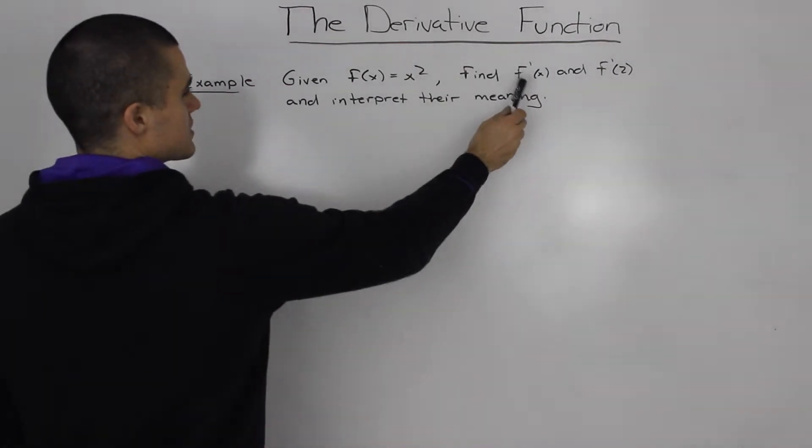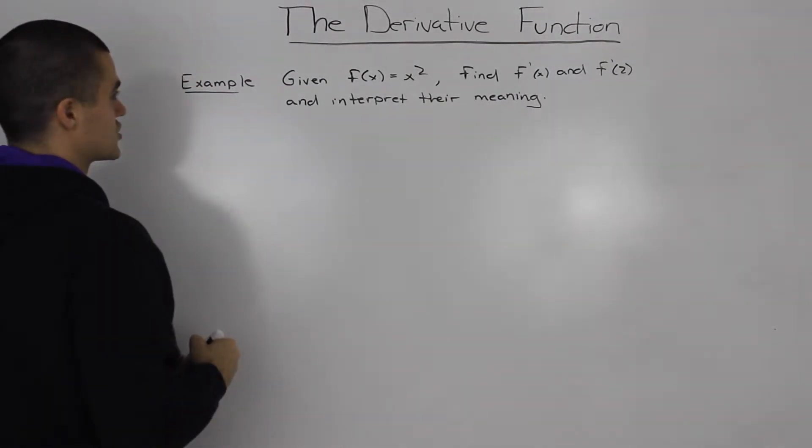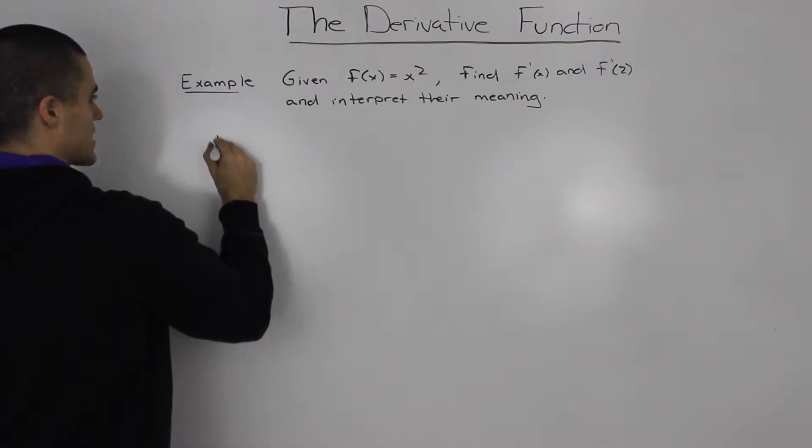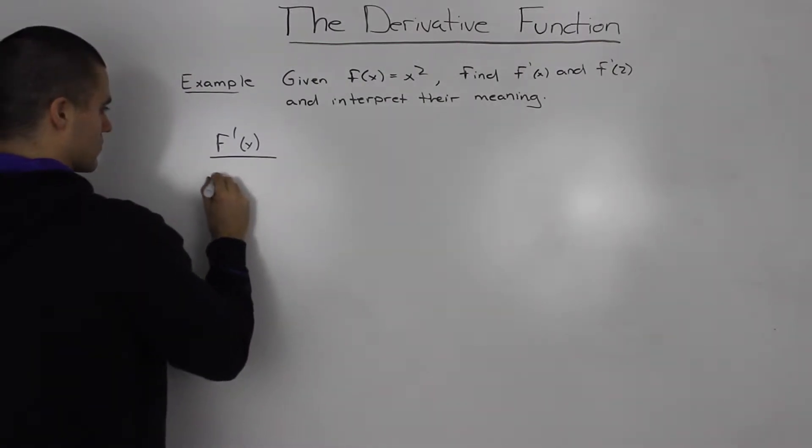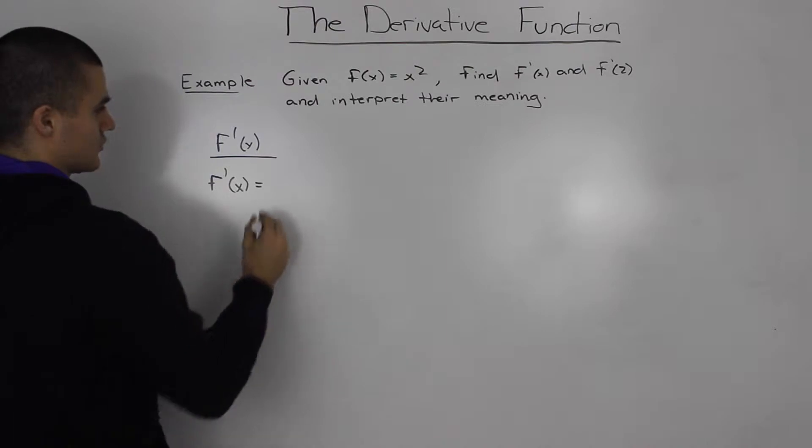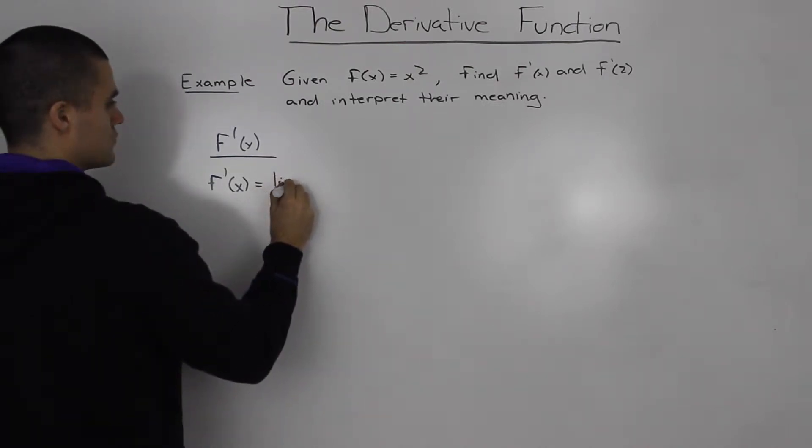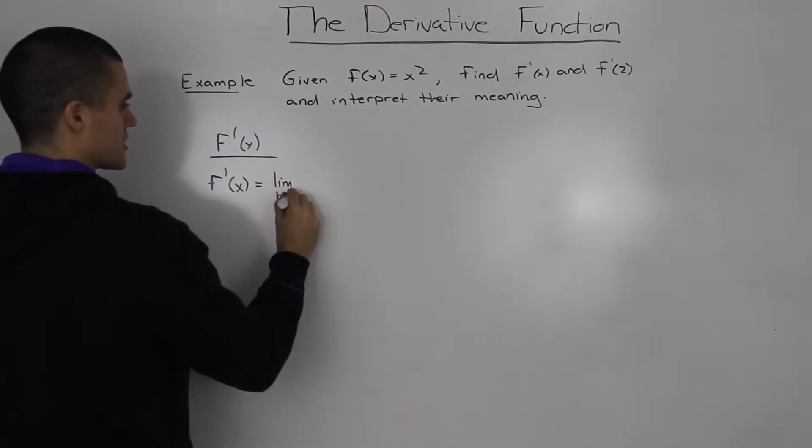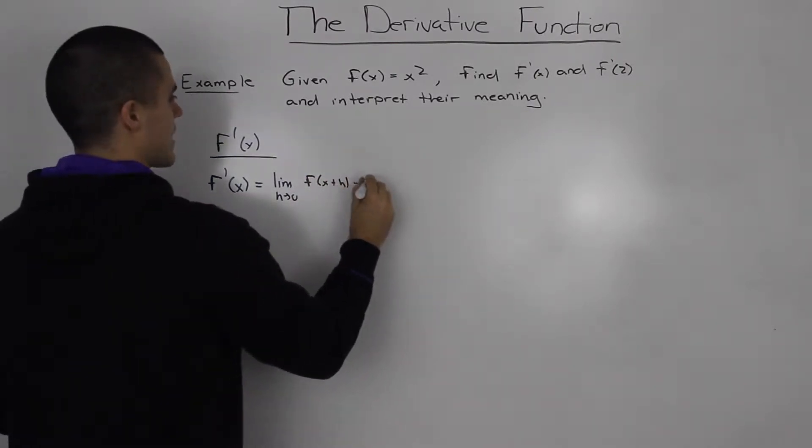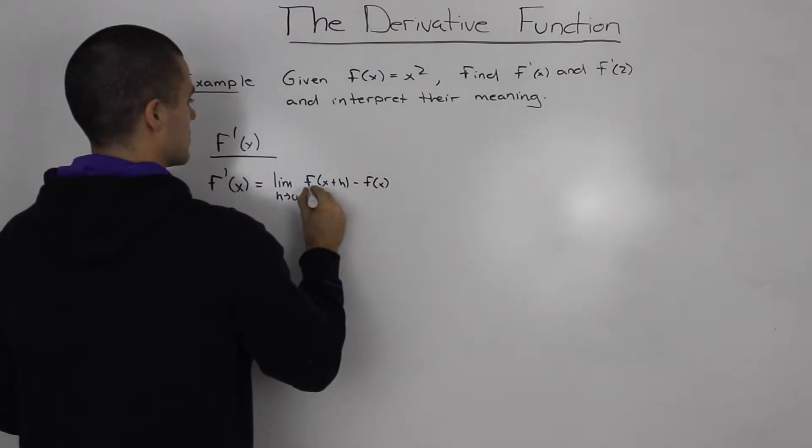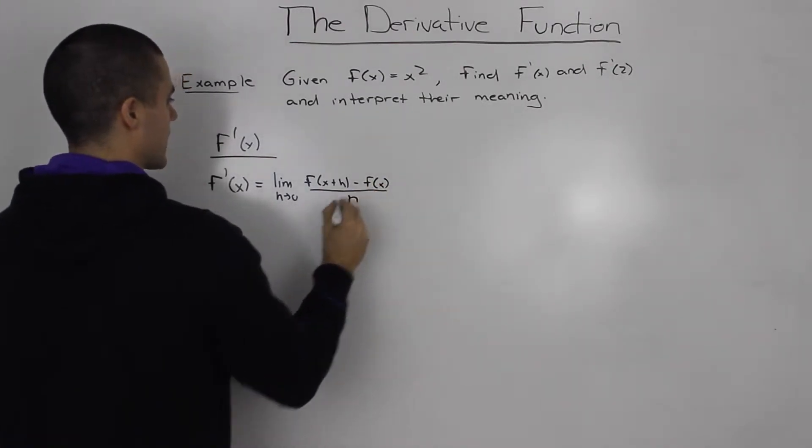Okay, so let's start off with finding this general derivative here or this f'(x). So how do we find the general derivative? Well, we use our difference quotient limit as h goes to 0, f(x+h) minus f(x) all over h.